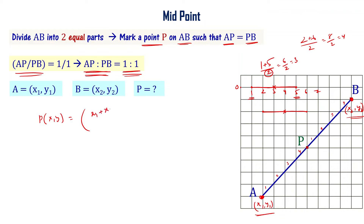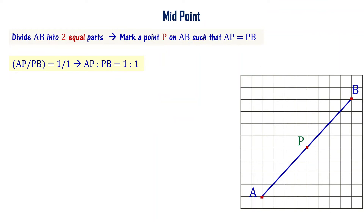The x-coordinate of midpoint P is x1 plus x2 divided by 2, and the y-coordinate is y1 plus y2 divided by 2. So midpoint P has coordinates x1 plus x2 divided by 2, comma y1 plus y2 divided by 2. Got it?